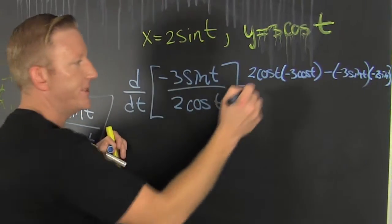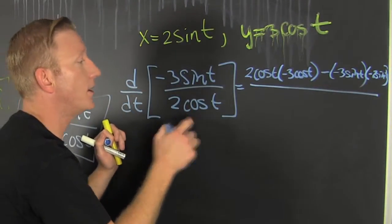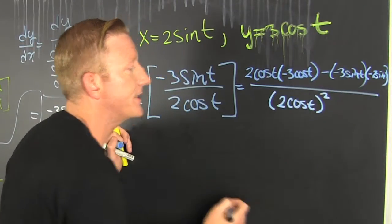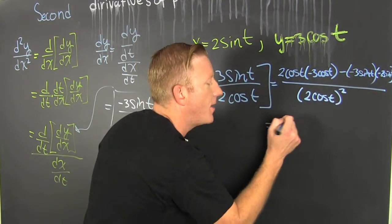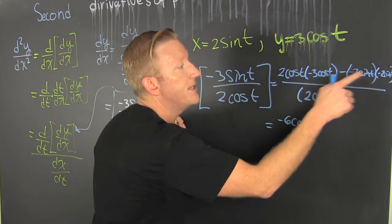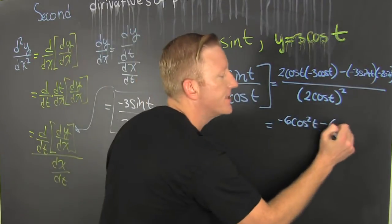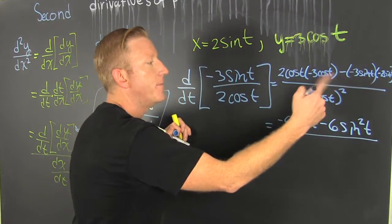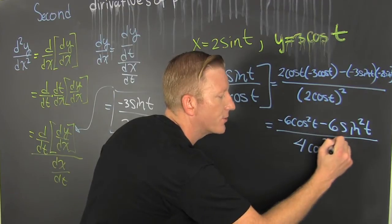All over low squared — that's 2 cosine t squared. Cleaning that up: minus 6 cosine squared t, and then minus and minus make a plus, so plus 6 sine squared t — wait, yes — 6 sine squared t. That's all over 4 times the cosine squared t.